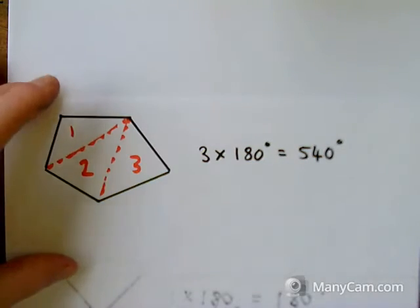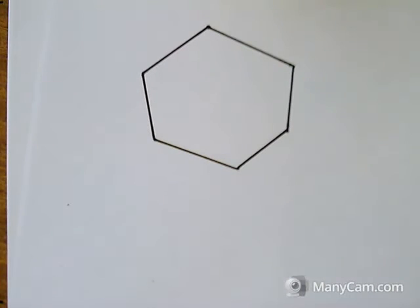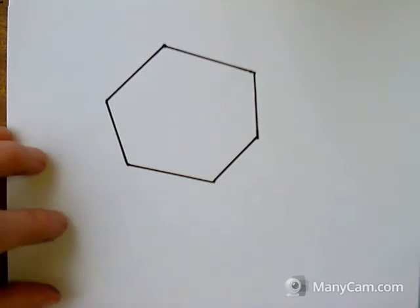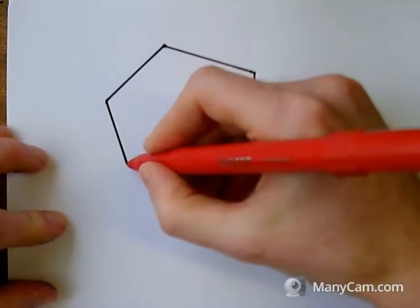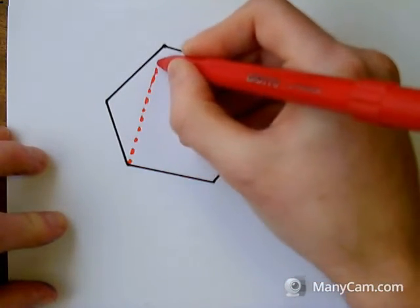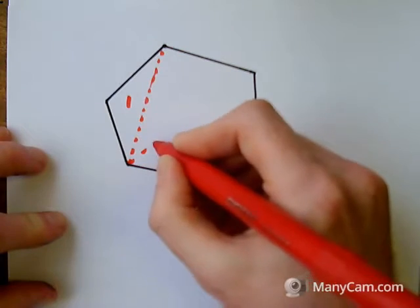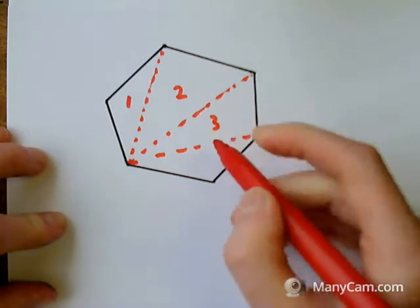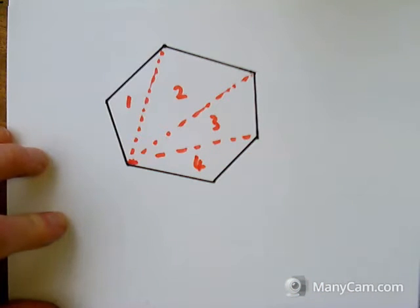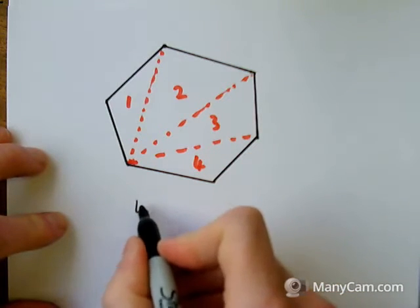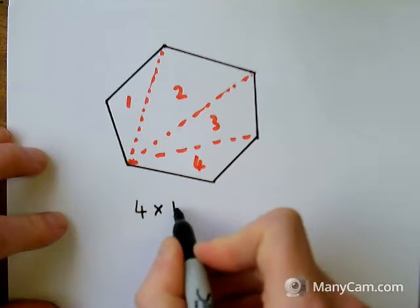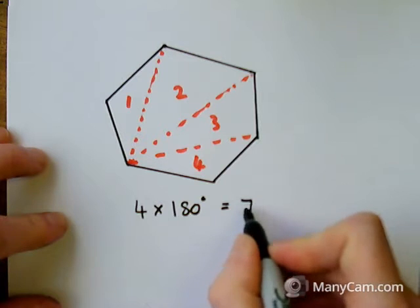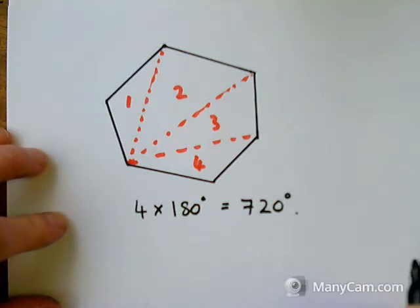Moving on to a six-sided shape, I'm going to do exactly the same method. I've got a six-sided shape here and I'm going to split it into triangles, coming across from this point. So I've got one triangle, two triangles, three triangles and four triangles. So a six-sided shape has four triangles, so four lots of 180 degrees gives me 720 degrees.